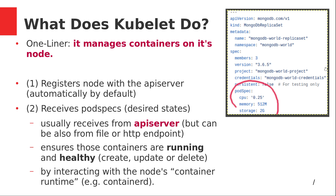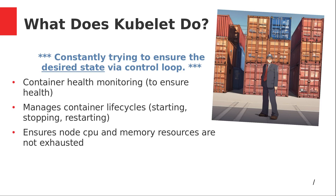Mechanically, how does kubelet do this? It will interact with the node's container runtime — for example, containerd. It's always trying to achieve the desired state and taking corrective action. That's why I've noted it in blue: it's constantly trying to ensure, via a control loop, the desired state. Kubelet is like a supervisor managing the containers while the containers are doing the actual work.